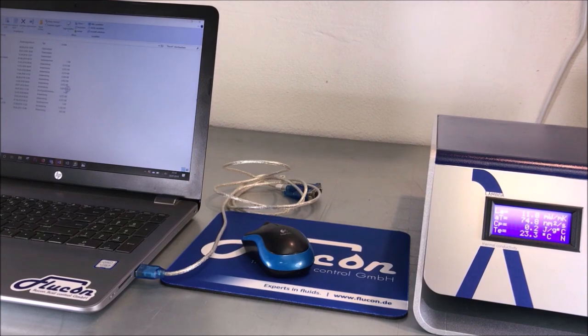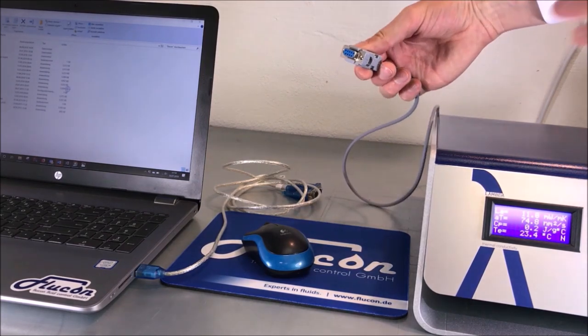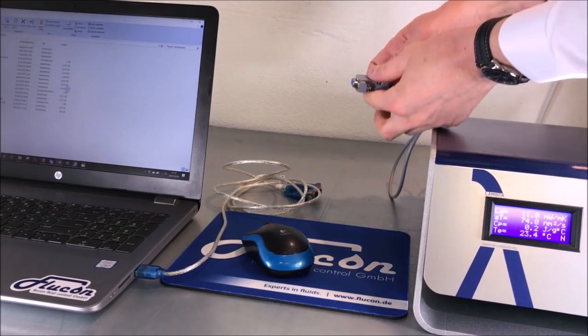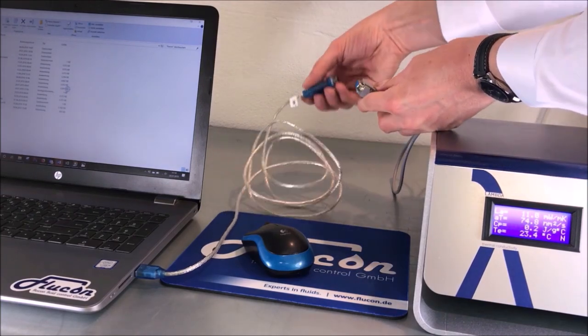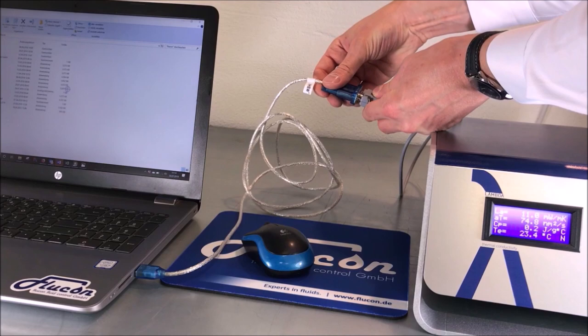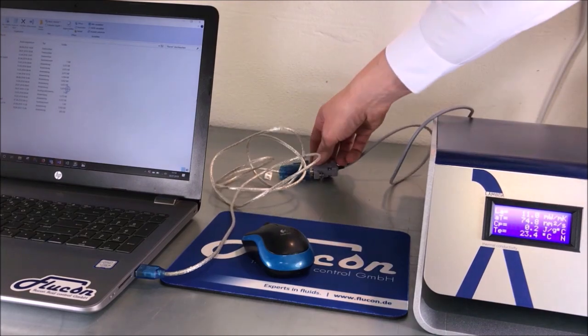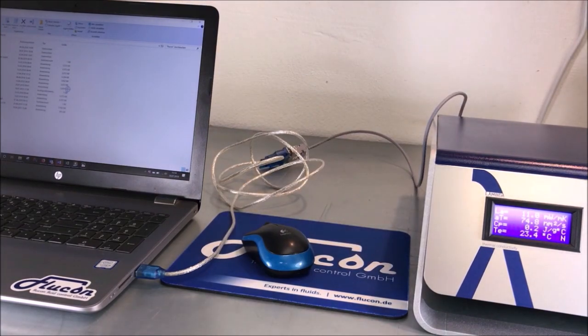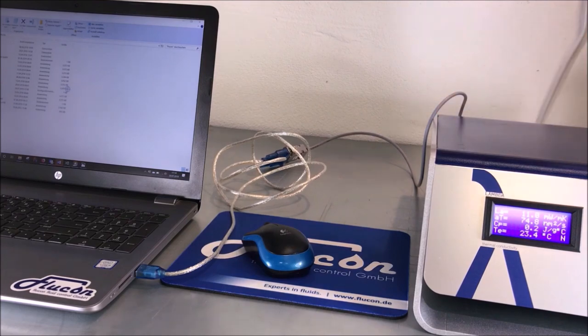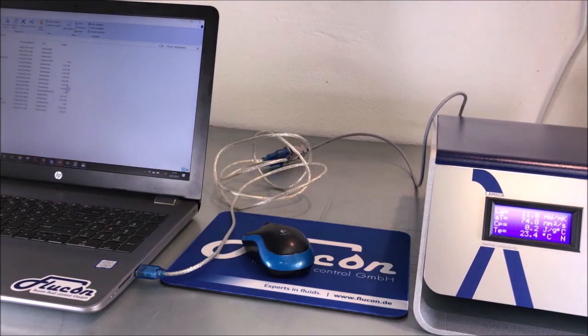You may want to check this by means of the device manager of your PC. Next, you connect the PC cable to your USB adapter. Now your Lambda meter is connected to your computer and you are ready to prepare for measurement.